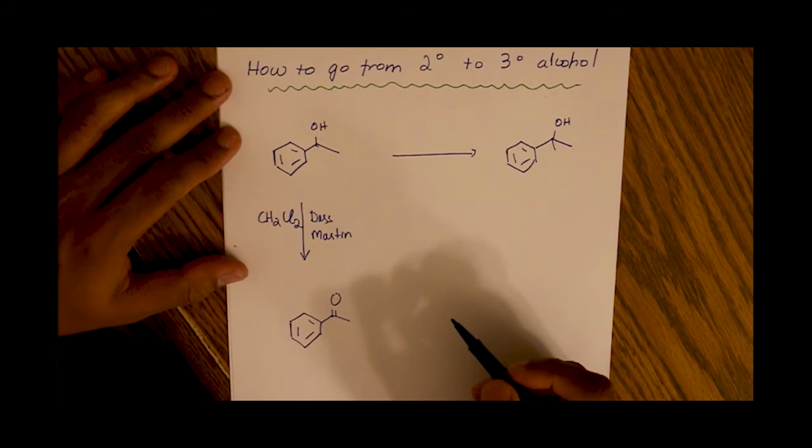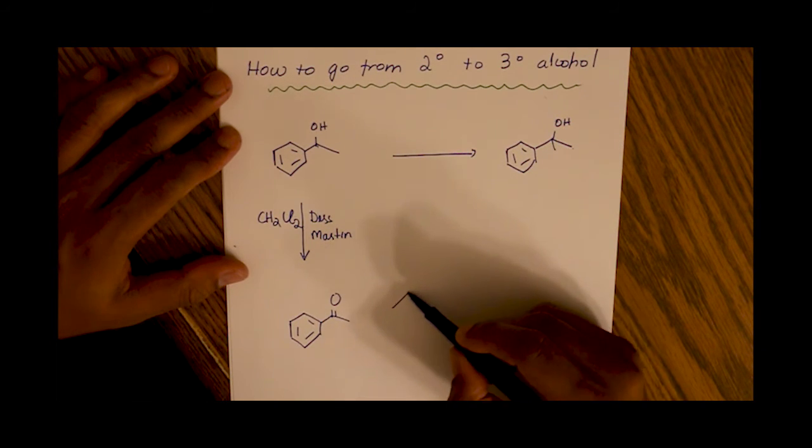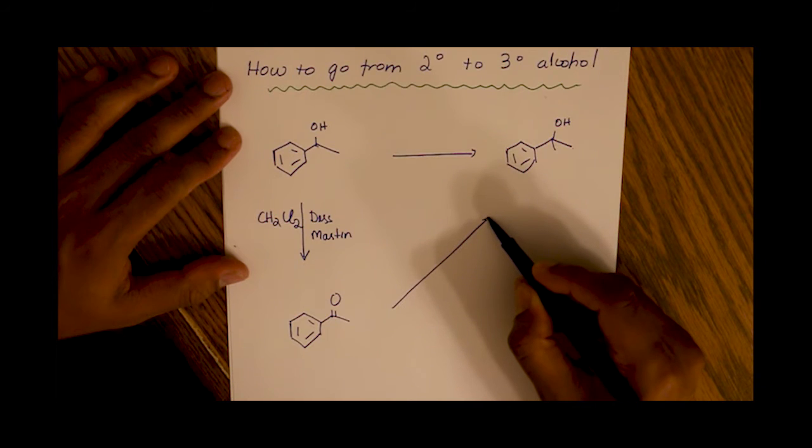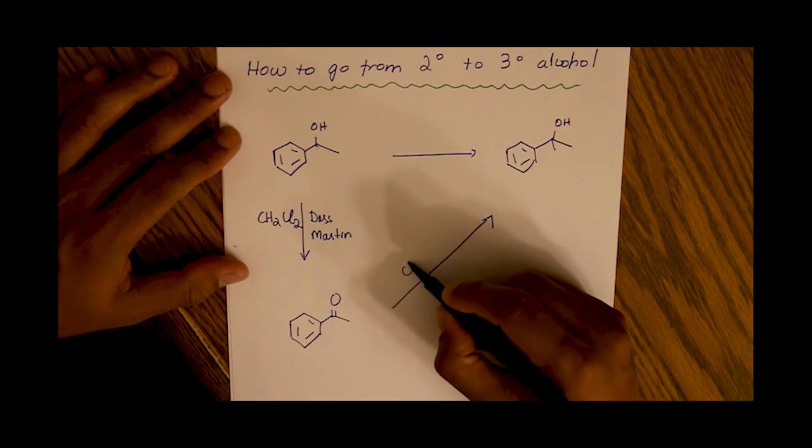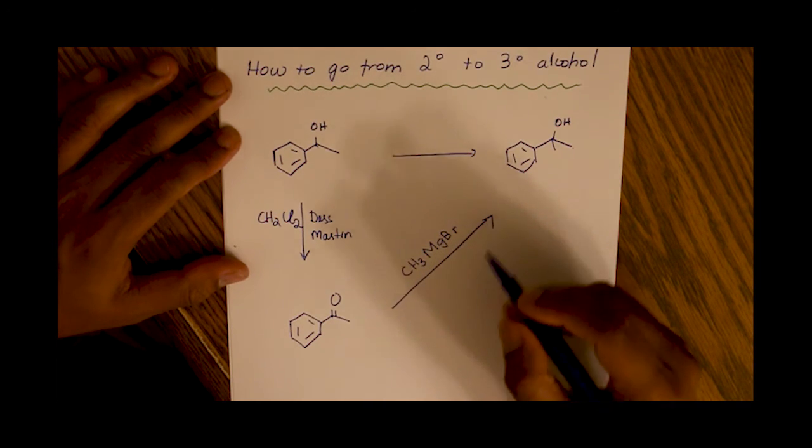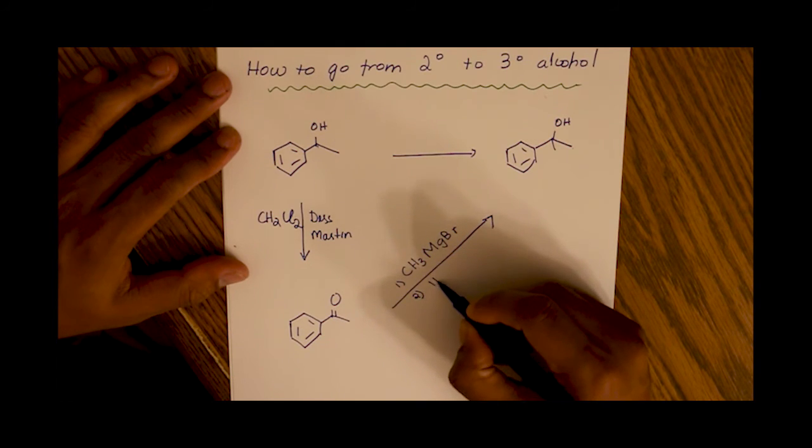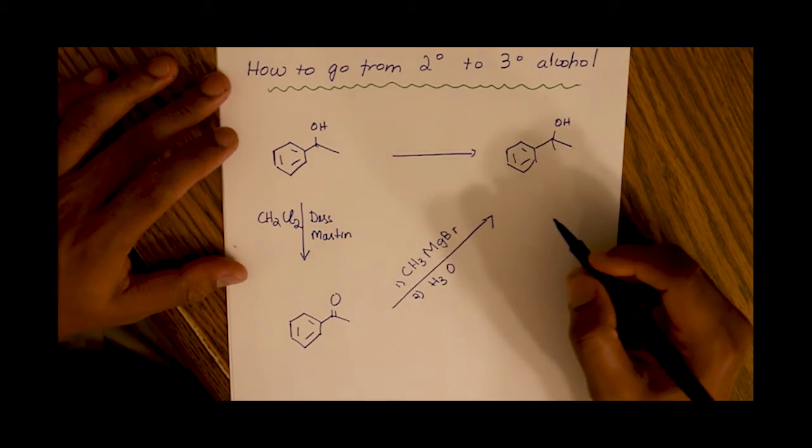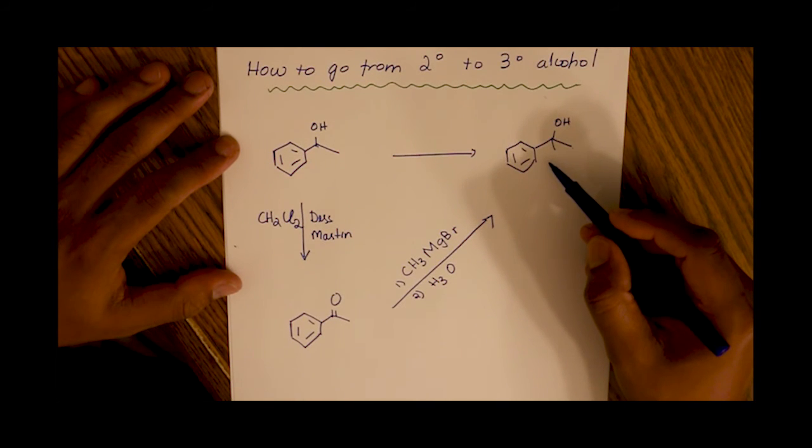Now that we have our ketone, we can use Grignard chemistry to arrive at the tertiary alcohol. So in this case, we add CH3MgBr, our Grignard reagent, in the presence of an acid workup. And this will give us our tertiary alcohol.